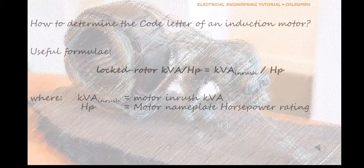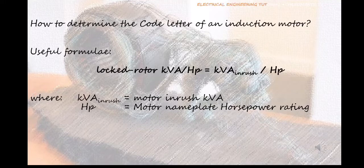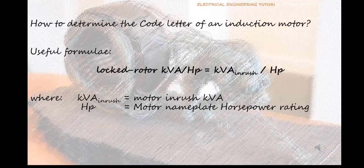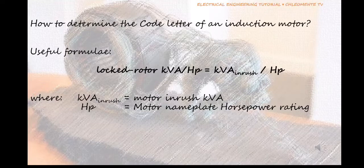So how to determine the code letter of an induction motor? Here's a very useful formula: locked rotor kVA per horsepower equals kVA inrush divided by HP. Where kVA inrush is the motor inrush kVA and HP is the motor nameplate horsepower rating.